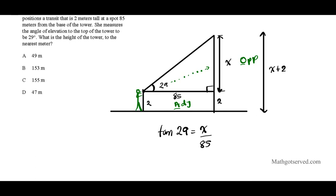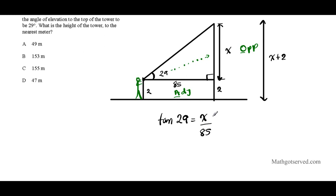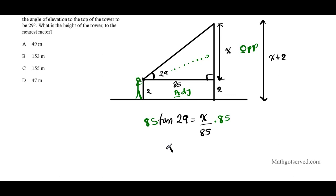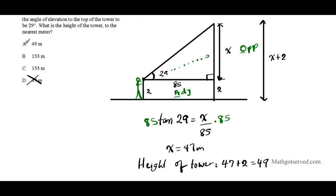But x is not the full height of the tower. We must add the height of the transit (2 meters) to x. So the height of the tower is 47 plus 2 equals 49 meters. The answer is option A.